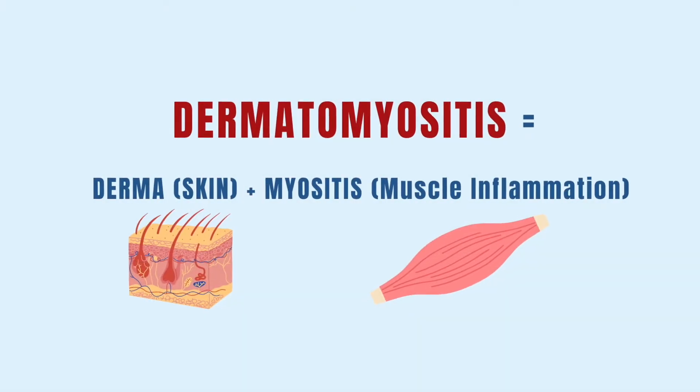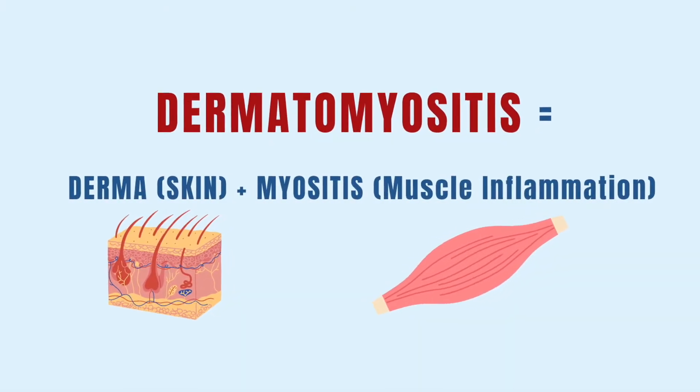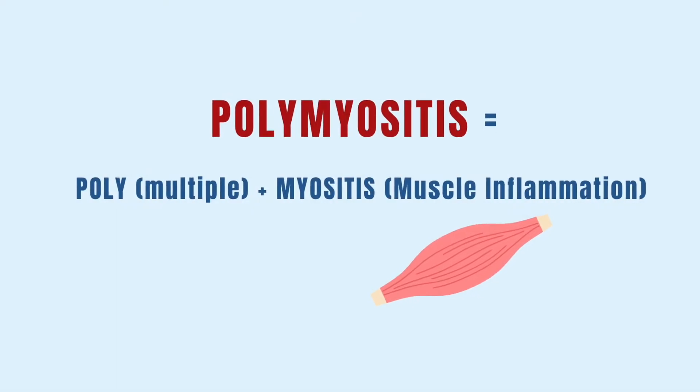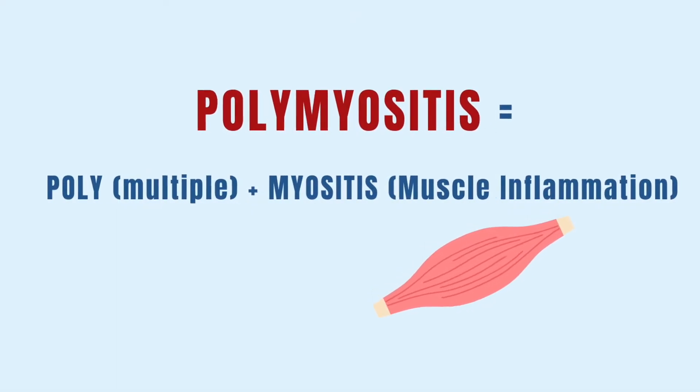Myositis is an inflammatory disease of the muscles. In Rheumatology, we talk about dermatomyositis when both the skin and the muscles are involved, and we talk about polymyositis when only the muscles are involved. There are also other types of myositis, but in this video I will discuss the most common signs and symptoms of dermatomyositis and polymyositis.